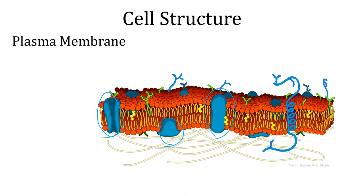Proteins are embedded in the membrane—some span the entire width, others are anchored to one end. There are also steroid molecules in it—cholesterol—which helps to stiffen the membrane so it isn't quite so fluid. Cholesterol gets a bad rap for being something horrible in your body, but in fact you need cholesterol in your cell membranes. It's only when you have a certain type in overabundance that it can cause health complications. Otherwise, cholesterol is definitely essential.